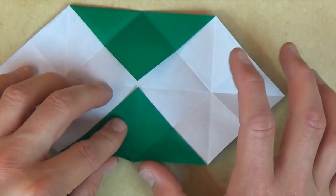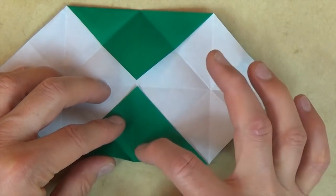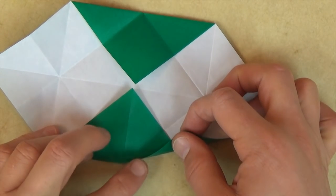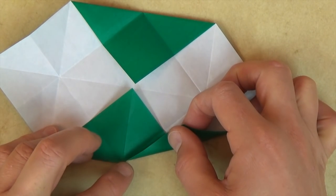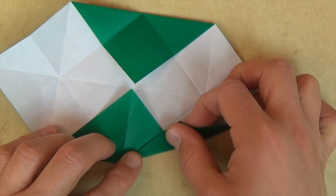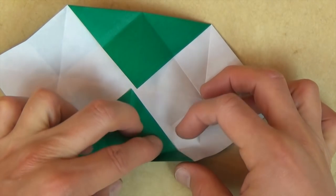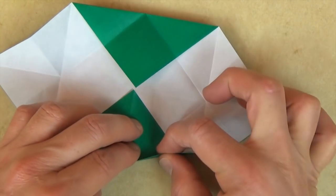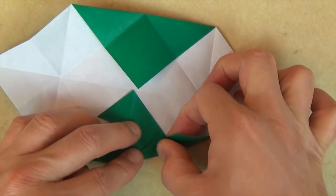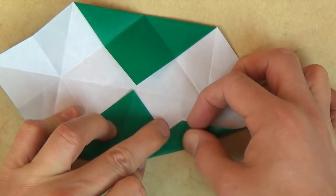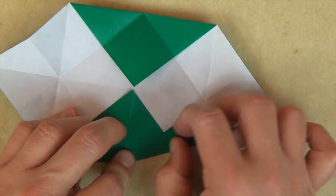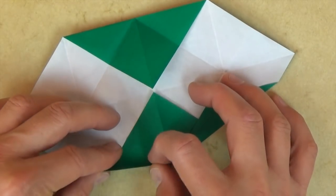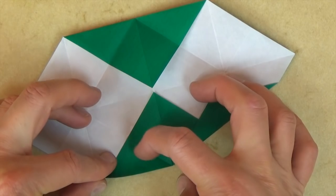And now let's fold this edge to this crease, so just fold up like this. Make sure that it comes right to this point. And when you do that you might want to hold the paper down so that it doesn't accidentally slide. Like that. And let's repeat on this side. So let's fold this edge to this crease.